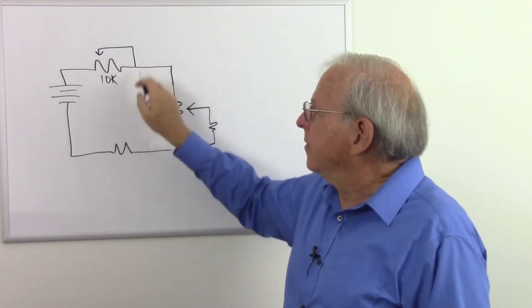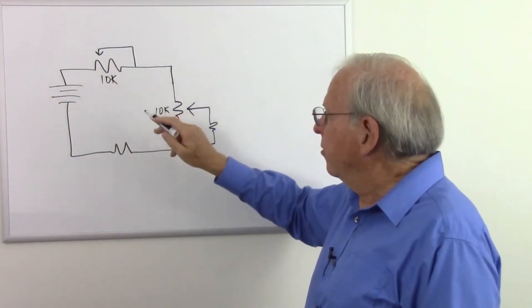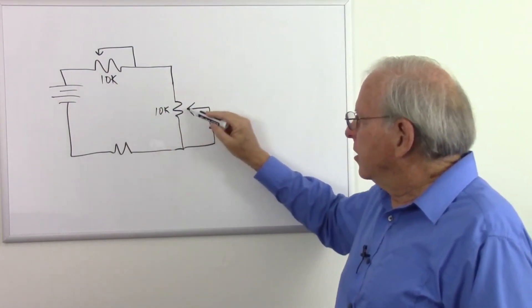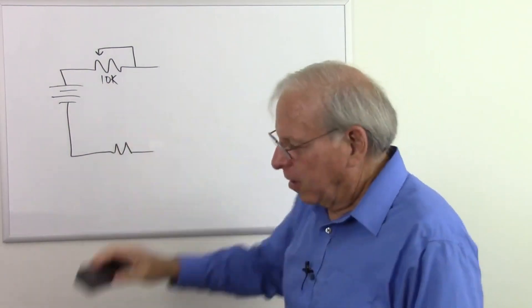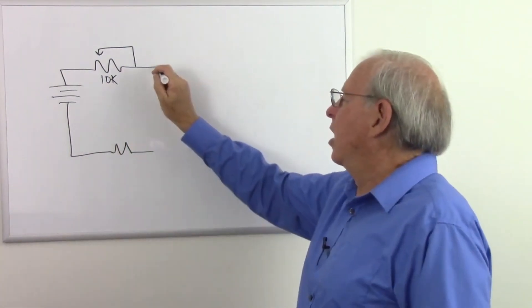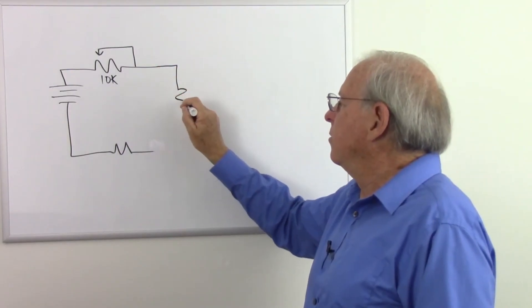So series circuit, there's your potentiometer as a variable resistor. Parallel circuit, there's your potentiometer actually splitting off. And of course, you know, if we have a series parallel circuits, we can put the potentiometer anywhere we need to put it.